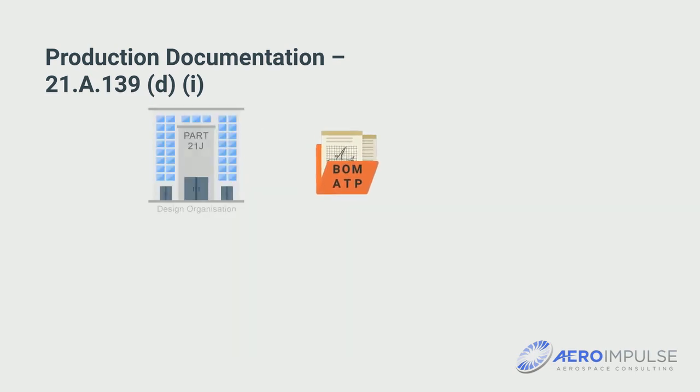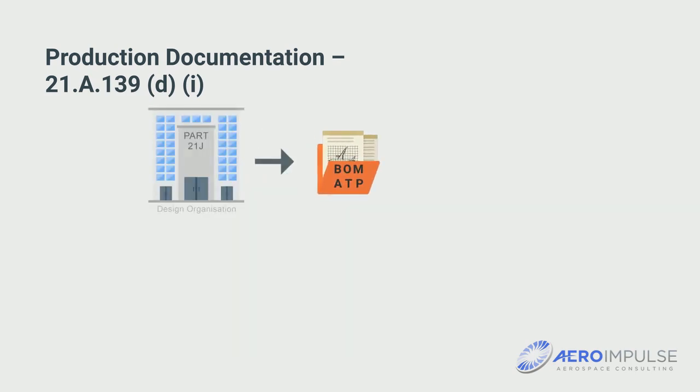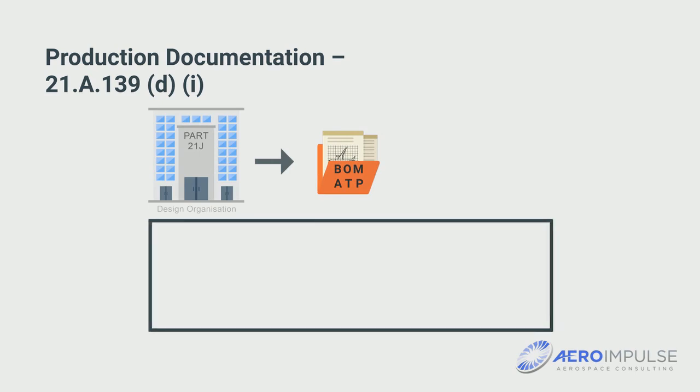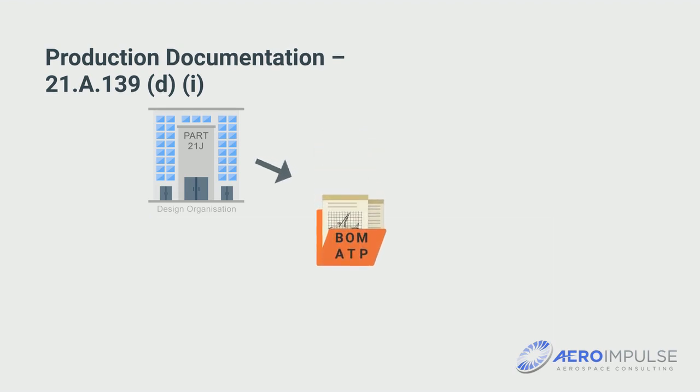The design data comes from the 21J Design Organization. They form the input of production and describe the structural design of the product, component, or material. Design data is created and released exclusively by the design organization.